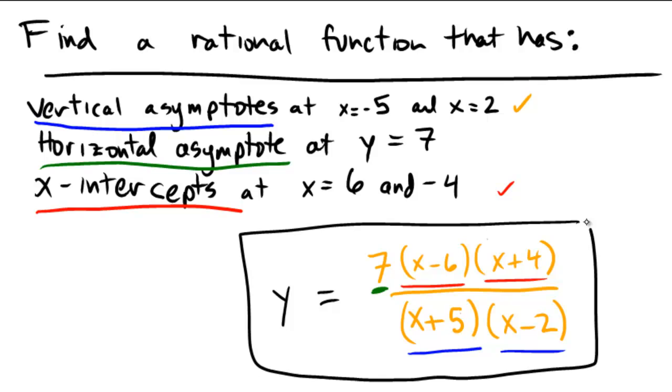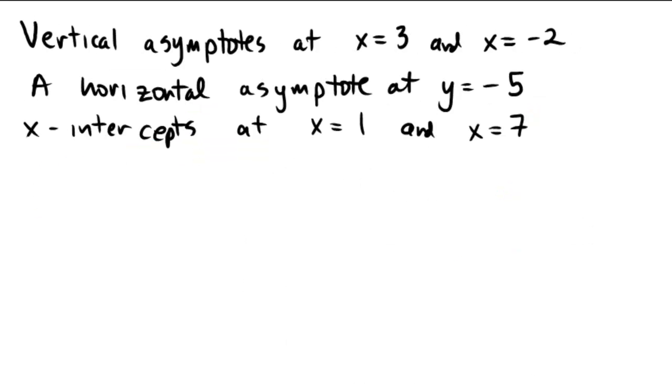So why don't you see if you can do one on your own here. Pause the video and see if you can find a function that has vertical asymptotes at x equals 3 and negative 2, one horizontal asymptote at y equals negative 5, and some x-intercepts at x equals 1 and x equals 7.